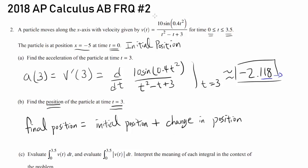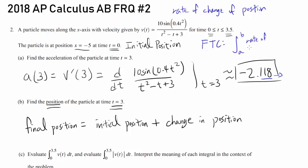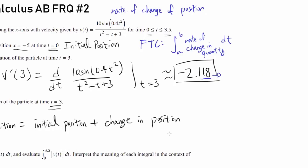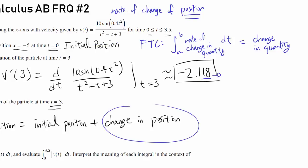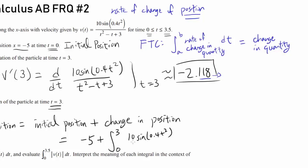To find the change in position, we have the velocity function, which is the rate of change of position. By the Fundamental Theorem of Calculus, when you definite integrate the rate of change from A to B, you get the change in that quantity from A to B. So we integrate the velocity function from 0 to 3: negative 5 plus the integral from 0 to 3 of 10 times sine of 0.4t squared over t squared minus t plus 3 dt, and you should get negative 1.760.